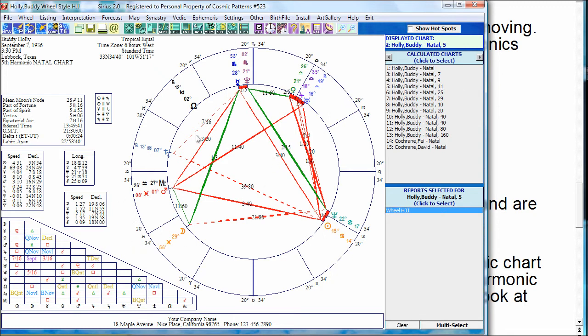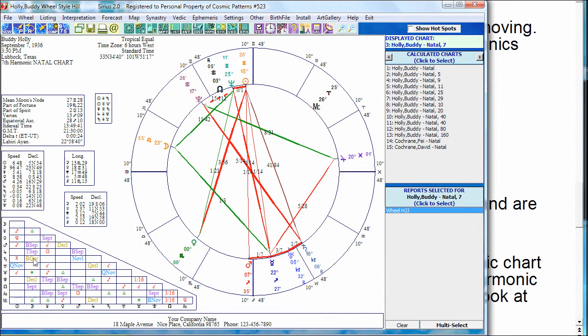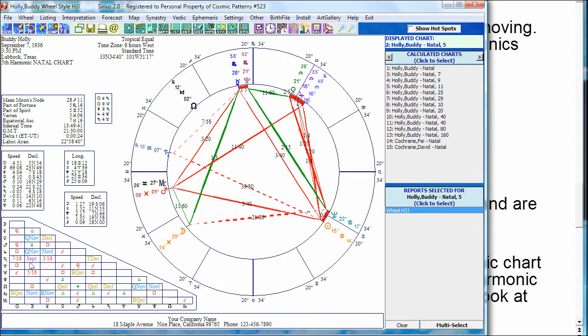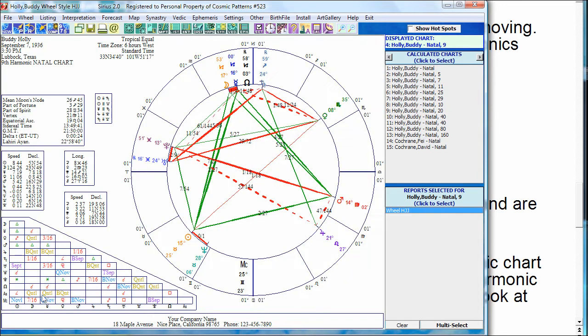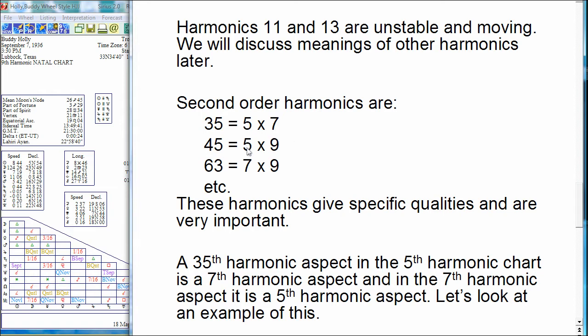So, we've got a 5th harmonic chart for Buddy Holly. This is very small on your screen, but notice that Moon and Saturn, it says septile, means they're a 7th. So, they're a 7th aspect, one 7th or a septile, in the 5th harmonic chart, which means that the 7th harmonic chart, Moon and Saturn are a 5th, they're a quintile. So, that's the idea. Let me show you one more example. In the 5th harmonic chart, Moon to Venus and Jupiter are noviles. It says quadnovile. Those are 9th. So, Moon in the 5th harmonic is a 9th. And then in the 9th harmonic, the Moon to Venus and Jupiter become 5th. So, all I'm really saying is that 45 equals 5 times 9. So, if you're in the 5th harmonic, it looks like a 9th harmonic. And if you're in the 9th harmonic chart, it looks like a 5th harmonic aspect. So, that's just to show you that interchange and how that works.